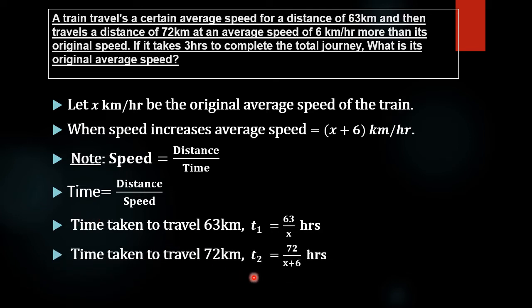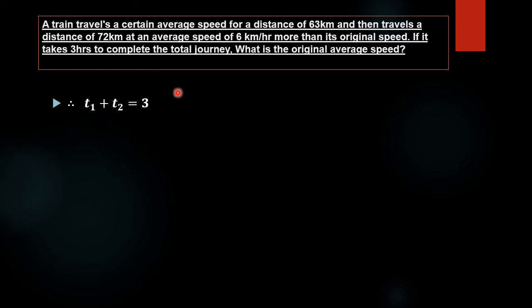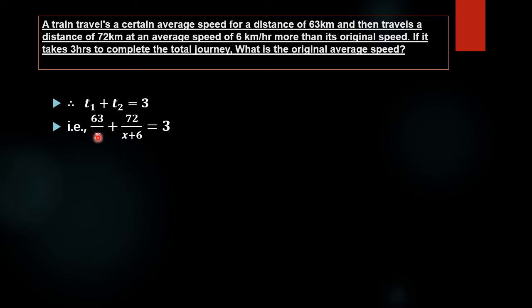The time for the next 72 km, named T2, is given by 72 divided by (x plus 6) hours. It is given that the entire time taken for the journey is 3 hours. Therefore, T1 plus T2 equals 3. Substituting the values of T1 and T2, we obtain: 63 divided by x, plus 72 divided by (x plus 6), equals 3.